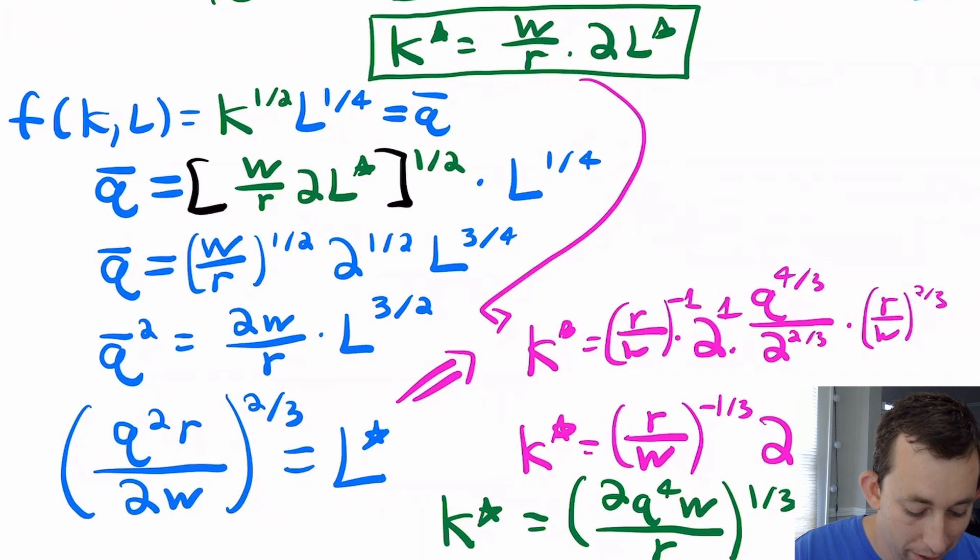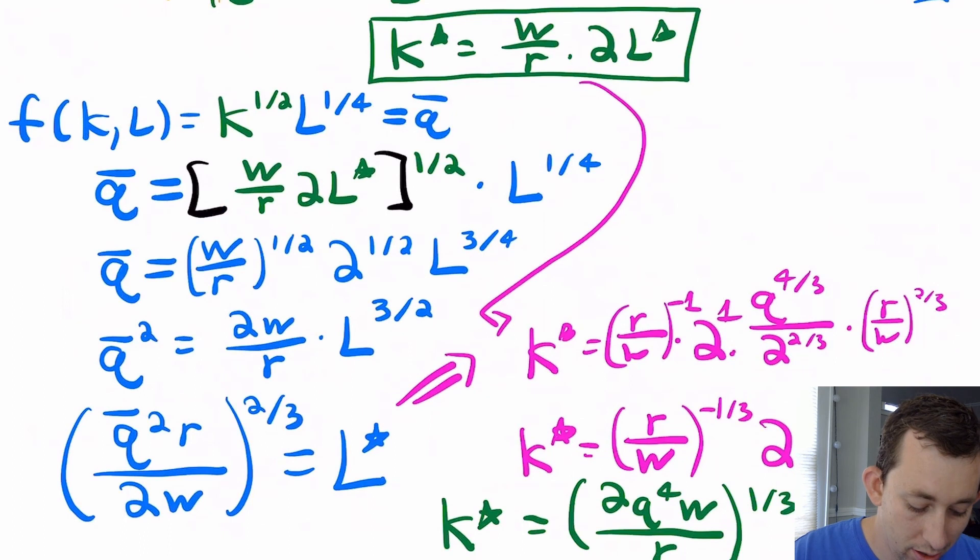Notice that both conditional factor demands are a product of two things. They are product of both the Q bar, the amount of product that I want to make, and they're a product of my input costs, which are R and W. So I'll go ahead and add this Q bar over here as well. Probably going to have dropped the Q bar in a lot of places, but whenever you see little Q, just think Q bar. Once we have K star and L star, then generally we're done. Generally, you're looking to find the conditional factor demand.